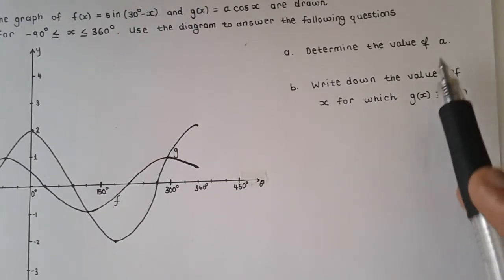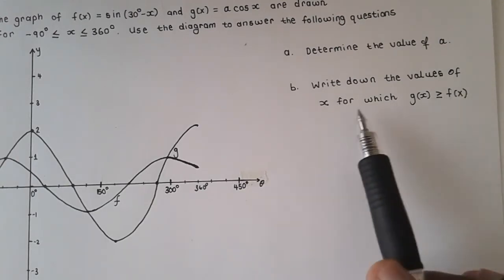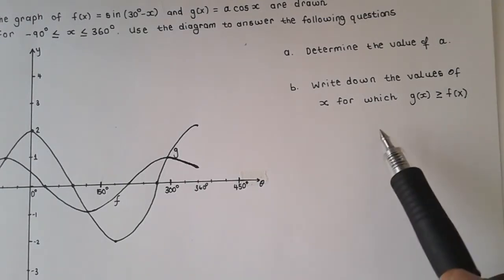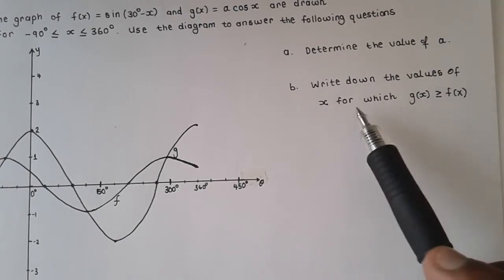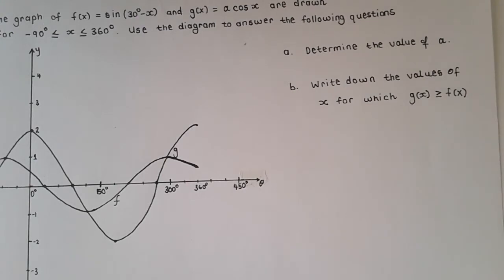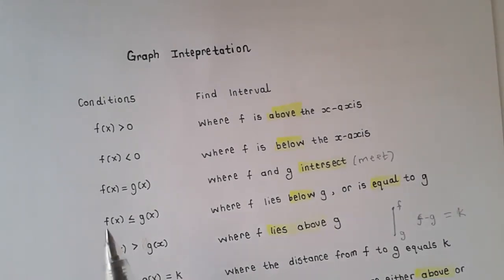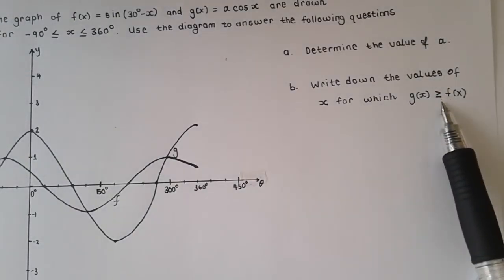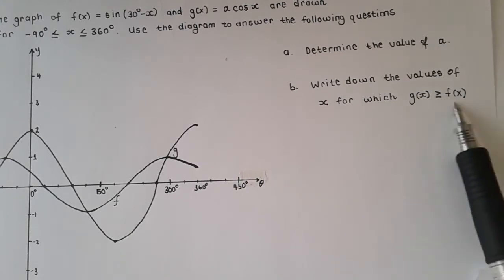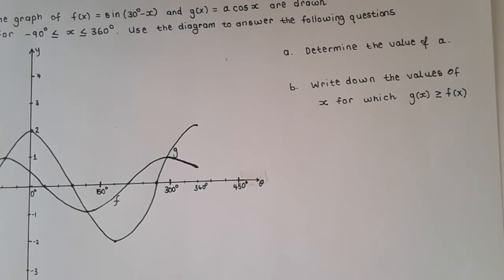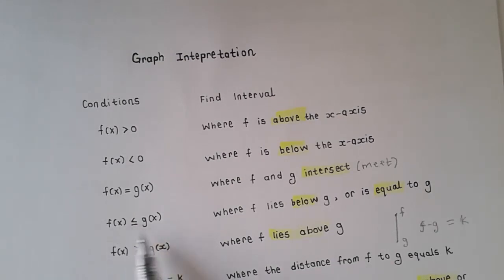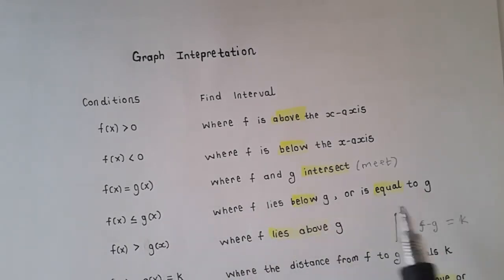The first question says: determine the value of a. The second question says: write down the values of x for which g(x) is greater than or equal to f(x). If we go back to our conditions, the condition they want you to learn is f(x) less than or equal to g(x), which means the first graph being below or equal to the second graph.